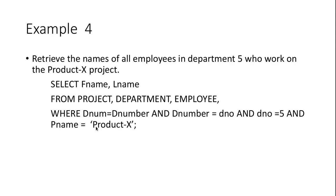To summarize: we need the names of all employees in a particular department who work on a particular project. Since the project name is mentioned, the Project table is included. Since the department number is mentioned, the Department table is included. Since employee names are to be retrieved, the Employee relation is included. Join all three tables and mention the conditions accordingly.